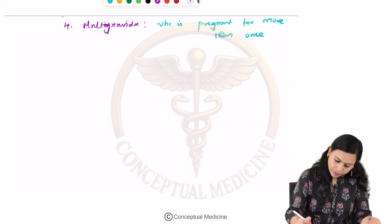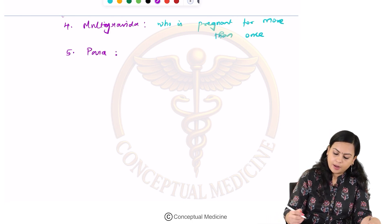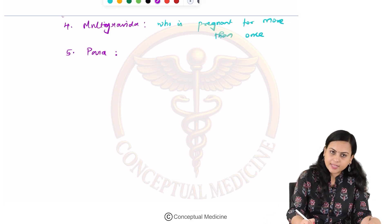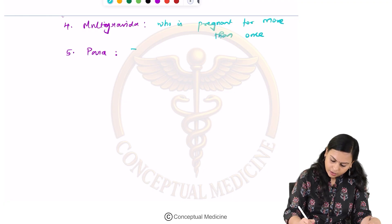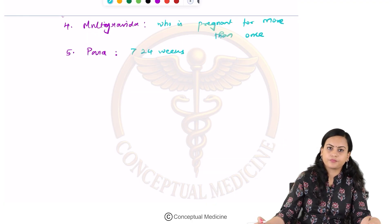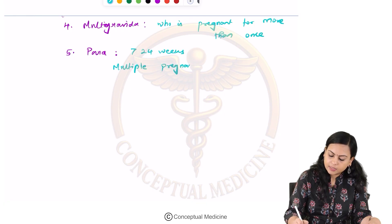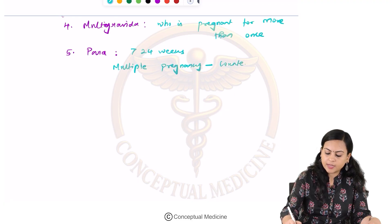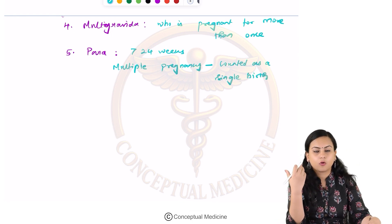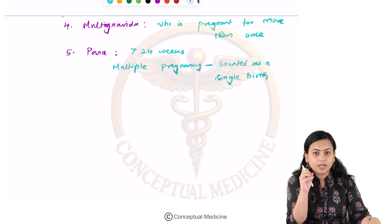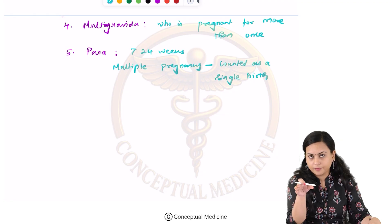Another important definition is 'para'. Para means she has delivered a baby after 24 weeks. In multiple pregnancies, this is counted as a single birth — we are counting the pregnancies, not the number of fetuses. Multiple pregnancy refers to the fetuses, but in para we are talking about the birth only, so it is counted as a single birth.